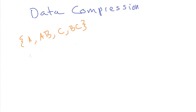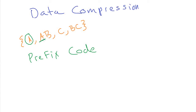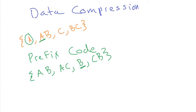But it turns out that's not always the case when we have multiple-length symbols. Sometimes it is and sometimes it isn't. There's a special type of code called a prefix code where we can have multiple different lengths in our symbols but still don't have to put in separators. The previous example is not a prefix code because the symbol A is the prefix of another symbol in the code. That makes it not a prefix code.